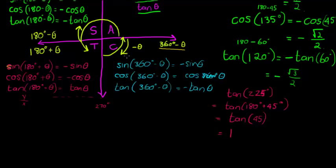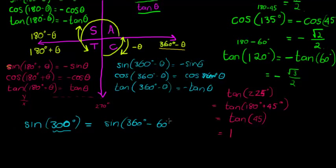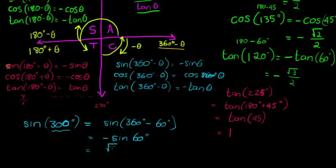Let's choose an example: sine of 300 degrees. That's an angle in the fourth quadrant, so I must write it as 360 minus something: sine of 360 minus 60 degrees. Since this is in the fourth quadrant, sine is negative, so we multiply sine of 60 degrees by a negative. Sine of 60 degrees is square root of 3 over 2, so the answer is negative square root of 3 over 2. I also notice I made a mistake earlier — for tan of 60, the denominator should be 1, not 2. I'm sorry about that; hopefully you picked it up.